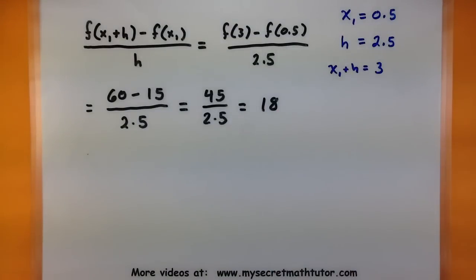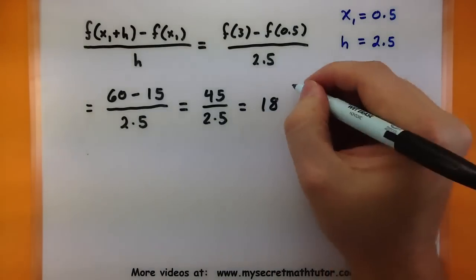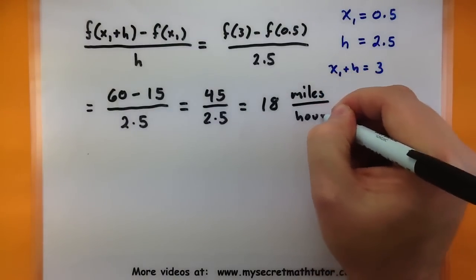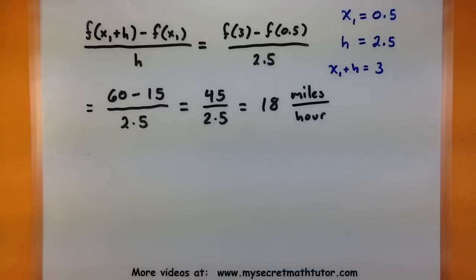Since we are looking at our change in distance over the change in time, this is in miles per hour. So our average rate of change, or in this problem, our average miles per hour, is 18.